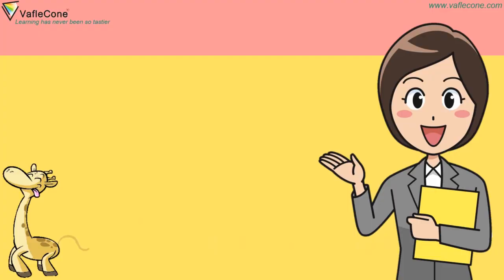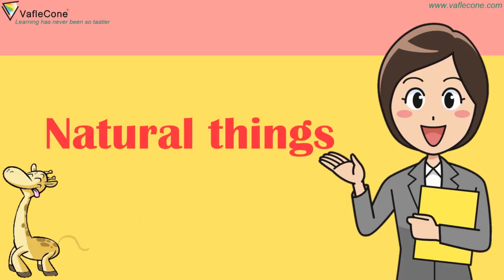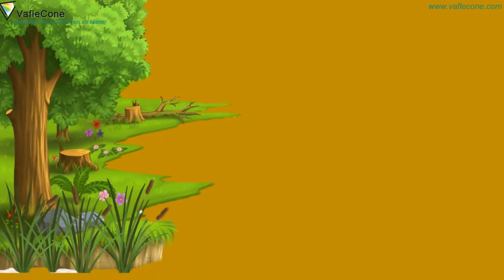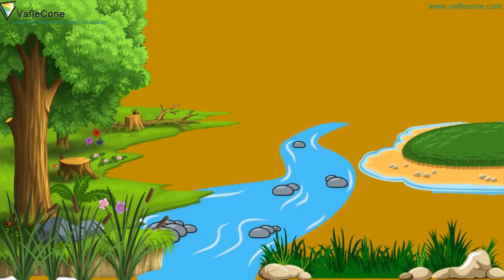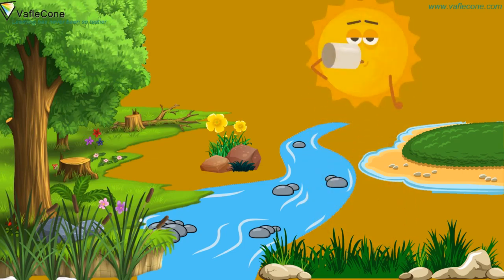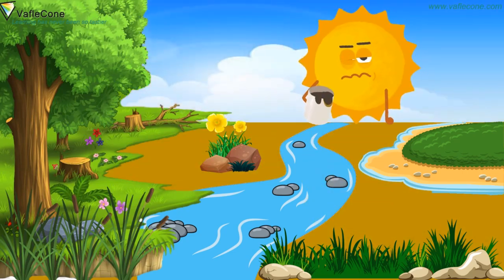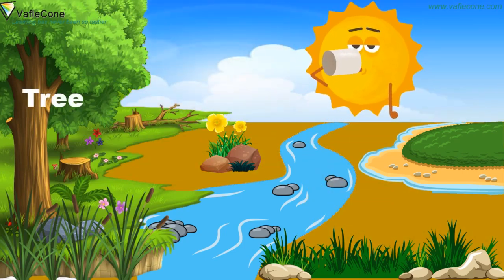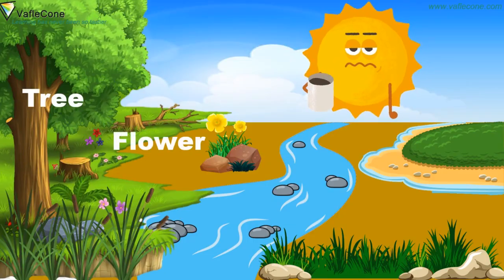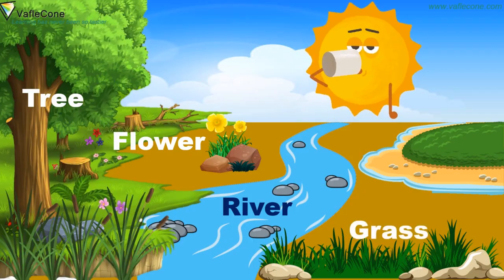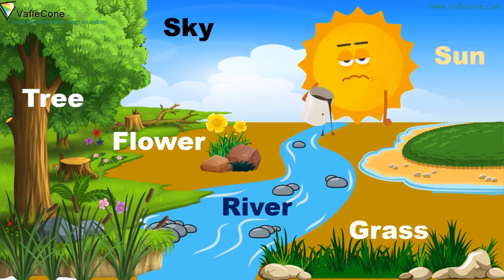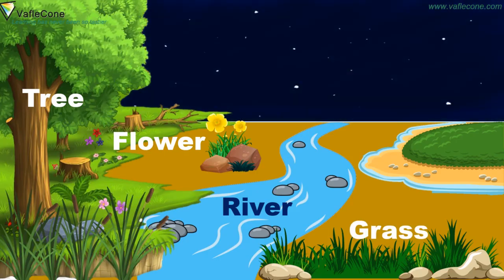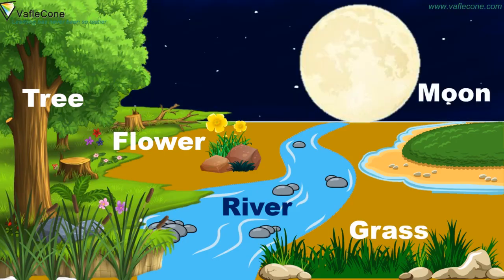Now let's discuss about natural things. Natural things are trees, flowers, river, grass, sky, sun, moon, etc.